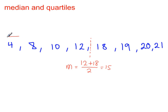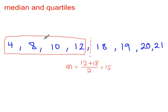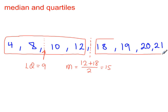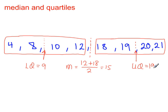Take the lower half of your data and look for the number that's right in the middle. There isn't one, so you take the 8 and the 10 — halfway between them is the lower quartile, which is 9. Then take the upper half of your data. There's no value right in the center, so you take halfway between 19 and 20 — add them up and divide by 2 — and that gives 19.5. So the upper quartile is equal to 19.5.